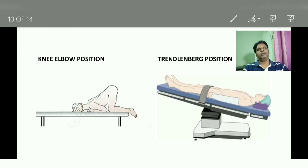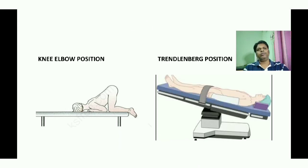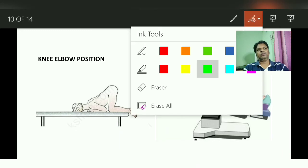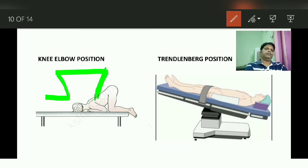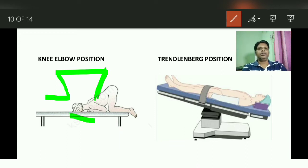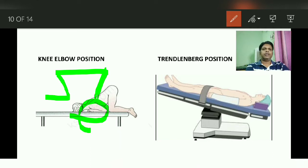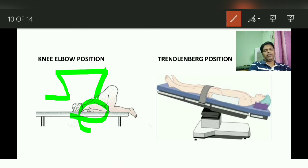The first is the knee elbow position. In the knee elbow position, you have to put the patient in prone position with knee flexion and elbow flexion — like a dog. What you are seeing is the knee chest position, where the chest is kept at a lower level. This knee elbow position is ideally useful in cases of young patients presenting with anorectal complaints.